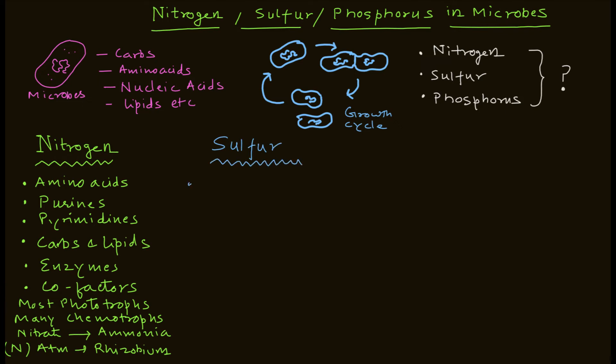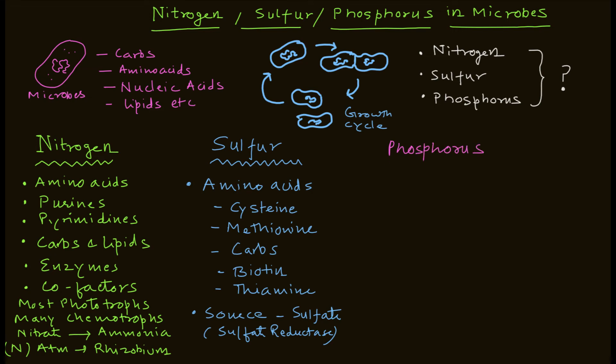Now let's talk about sulfur. Sulfur is also important for amino acids. There are two important amino acids which is cysteine and then you have methionine, where you basically require sulfur. Some of the carbohydrates as well as biotin and thiamine, in these you also need sulfur. And the sole source of sulfur is sulfate, and by the process of sulfate reduction you basically fulfill the requirement of these sulfur compounds.